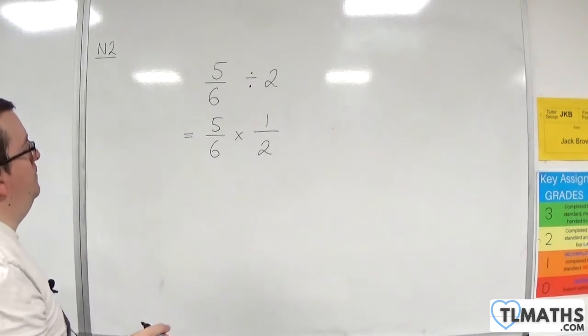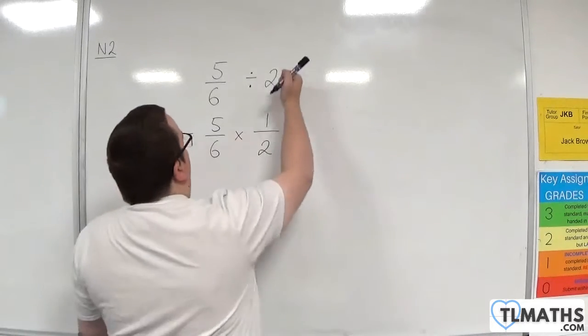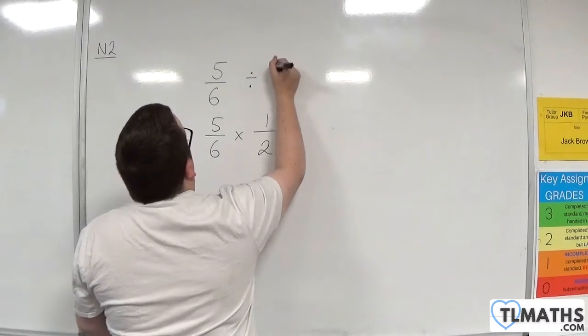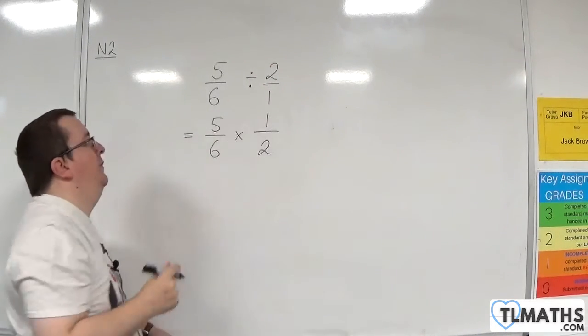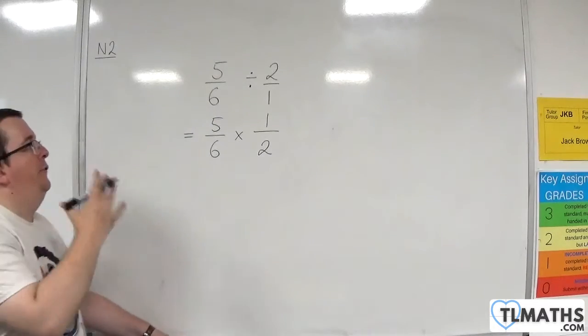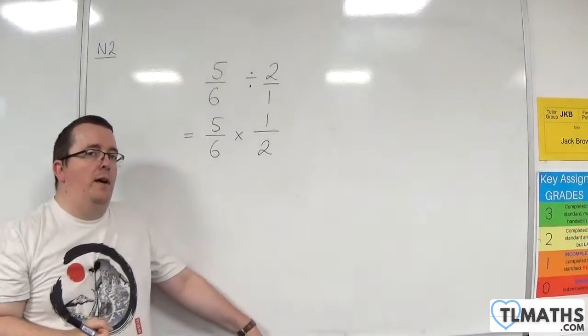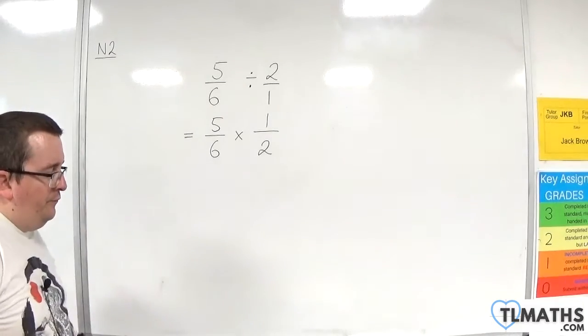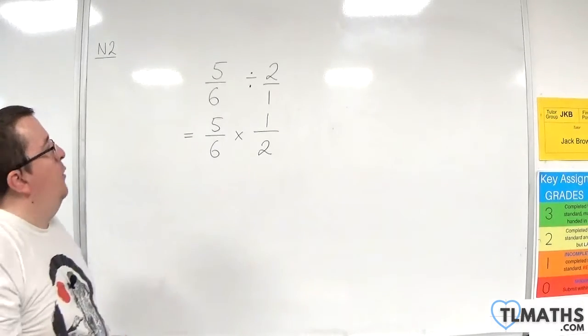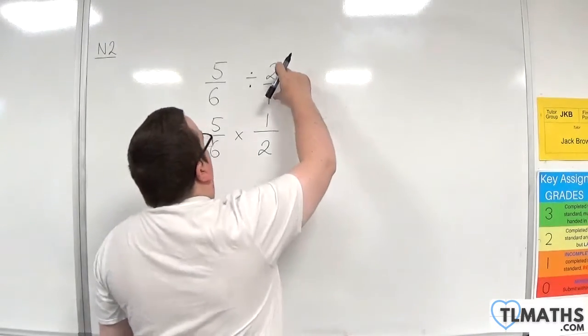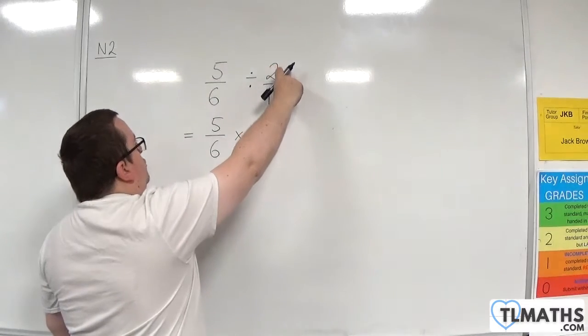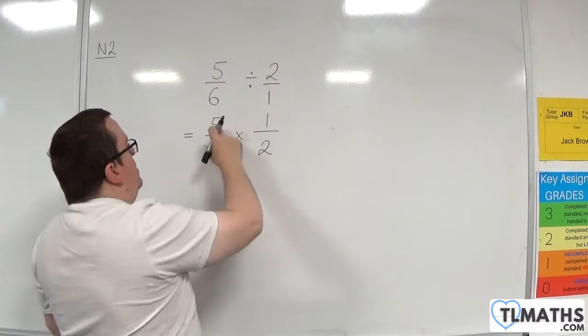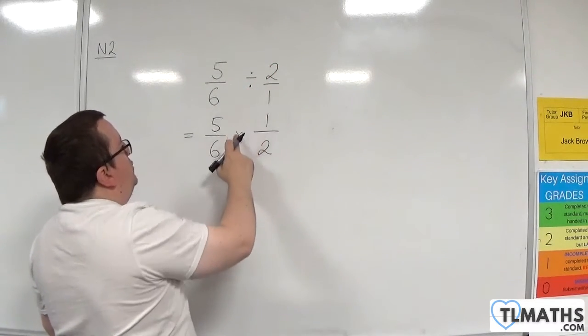Now we recognize that 2 is the same as 2 over 1. So I could write 5 sixths divided by 2 over 1 as 5 sixths times one half. Now, it is interesting to note that this original question can be rewritten like this by turning the division into a multiplication and turning that fraction upside down.